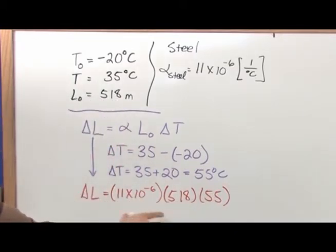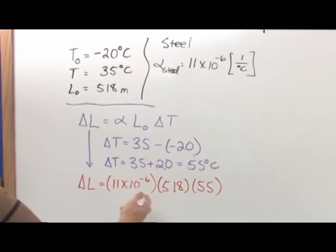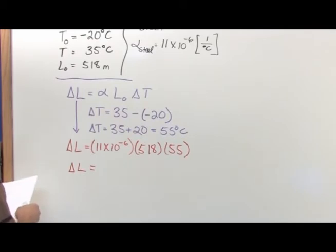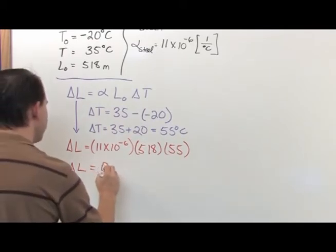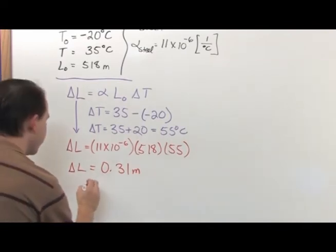Now we're good to go with these units because this is in terms of 1 over Celsius, this is in terms of Celsius, this is in terms of meters, so my final answer is going to be in terms of meters. When you do all of this multiplication in your calculator, you're going to get 0.31 meters. That's the answer, 0.31 meters.